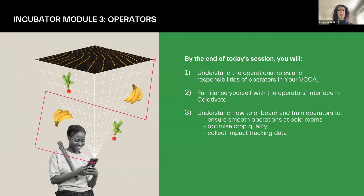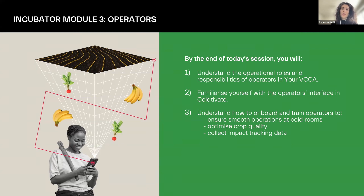The goal of the session is first to understand the split between who's a registered employee and who's an operator, and then to understand the main differences between the two interfaces. Only by understanding the different tasks and differences are you able to train them in the right way. In particular, we want to stress: general operations at the cold room — how the operator performs check-ins and check-outs — how Cultivate supports crop quality tracking, and how the app can track the impact of using the cold rooms.